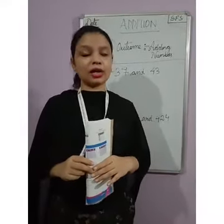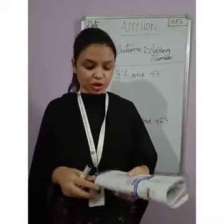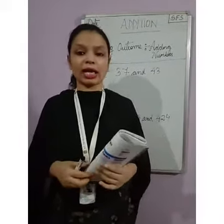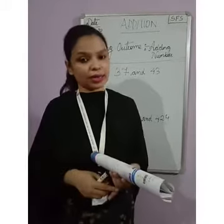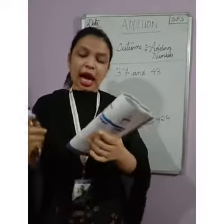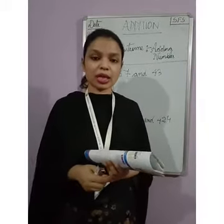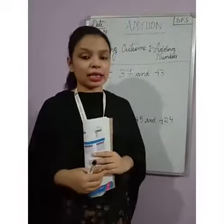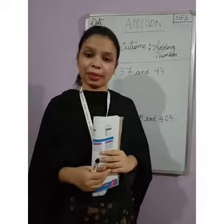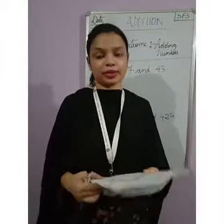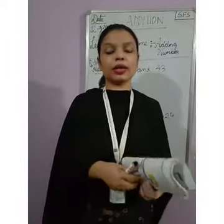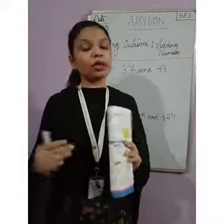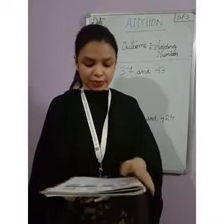There are 3 properties of addition. The first is the zero property — when we add 0 to a number, we get the number itself. The next is the after number property — when we add 1 to any number, we get the answer that is just after that number. And the third is the commutative property — if you change the position or order of 2 numbers, we get the same answer.